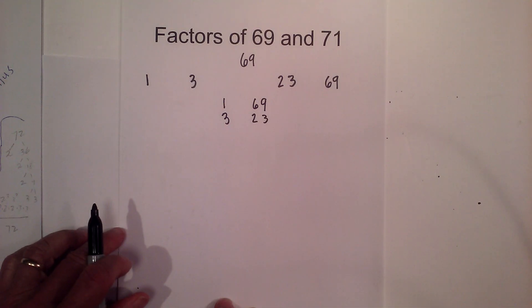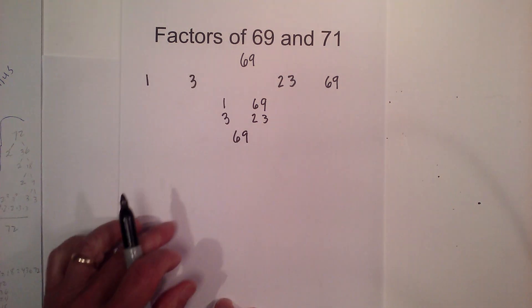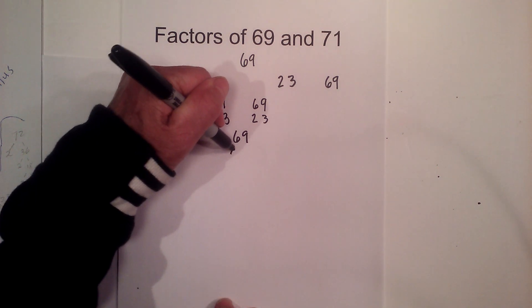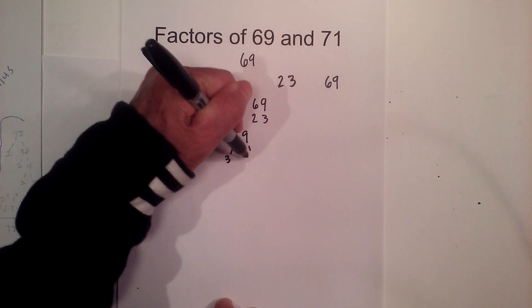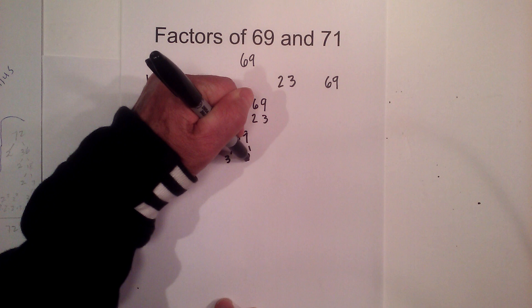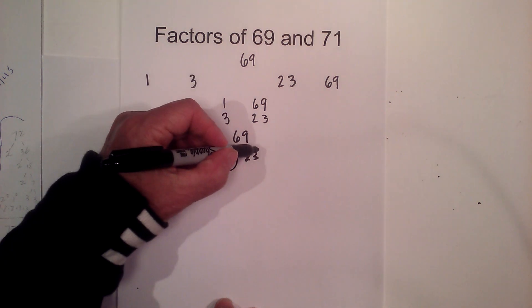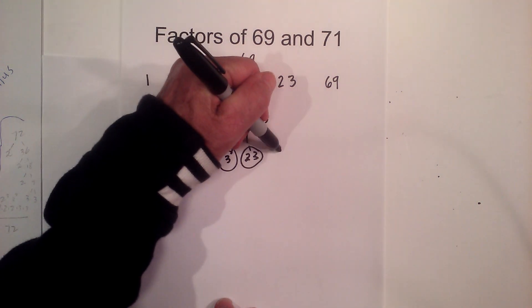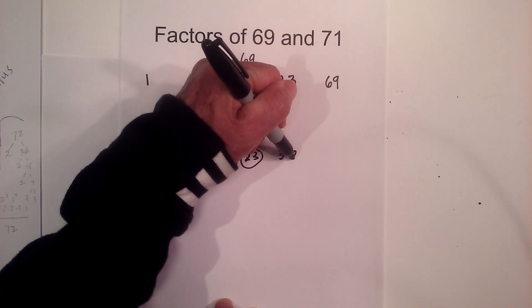If you'd like to know the prime factorization of 69, then it works out like this: it's just 3 times 23 equals 69. They're both prime, so let's circle them. So the prime factors are 3 and 23.